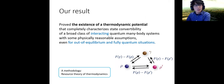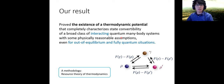Our answer is yes. We have proved that there exists a thermodynamic potential that can completely characterize state convertibility of a broad class of interacting quantum many-body systems with some physically reasonable assumptions, even for out-of-equilibrium and fully quantum situations. Our approach is based on the resource theory of thermodynamics, and we use Rényi entropy quantities and also quantum hypothesis testing. Although hypothesis testing is very different from thermodynamics, I will show that this quantum information theory concept is fundamentally related to thermodynamic characterization of state convertibility.